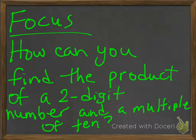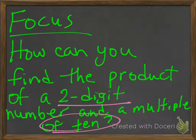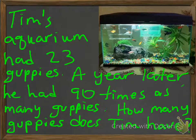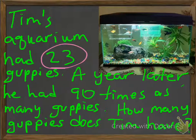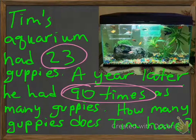Our focus is: how can you find the product of a 2-digit number and a multiple of 10? Let's take a look. Tim's aquarium had 23 guppies. A year later, he had 90 times as many guppies. How many guppies does Tim have?